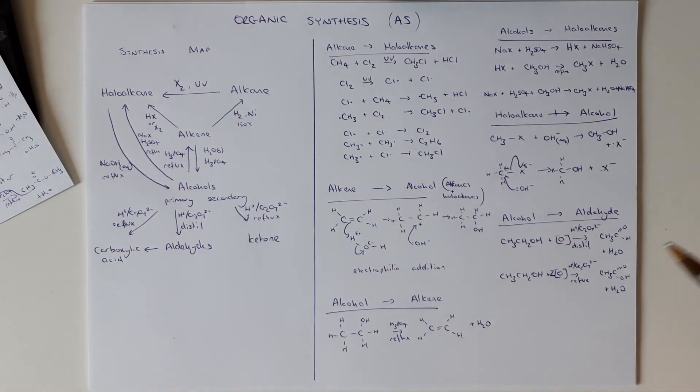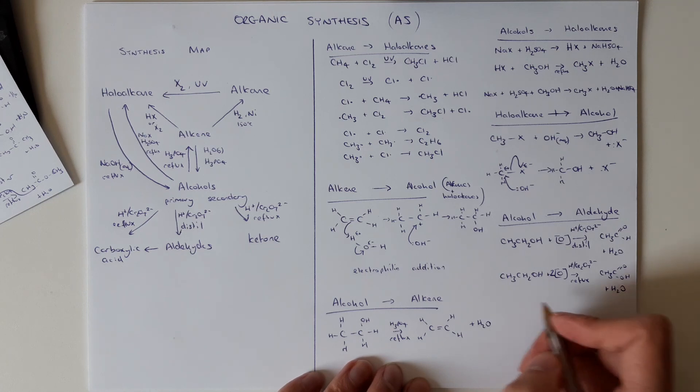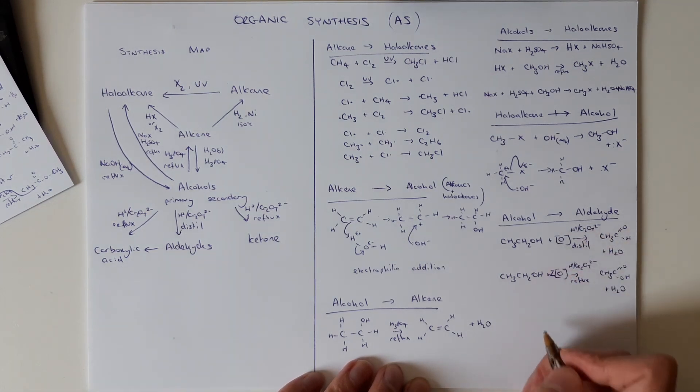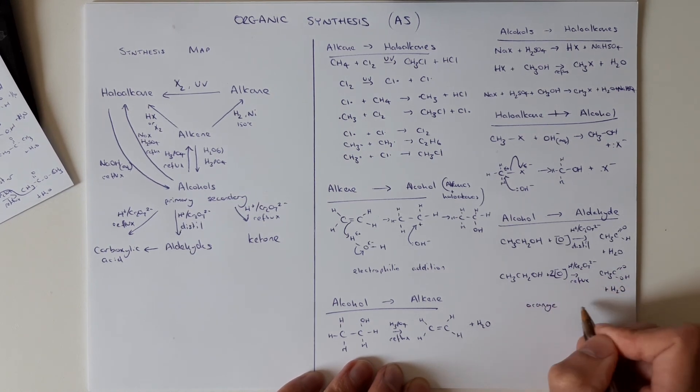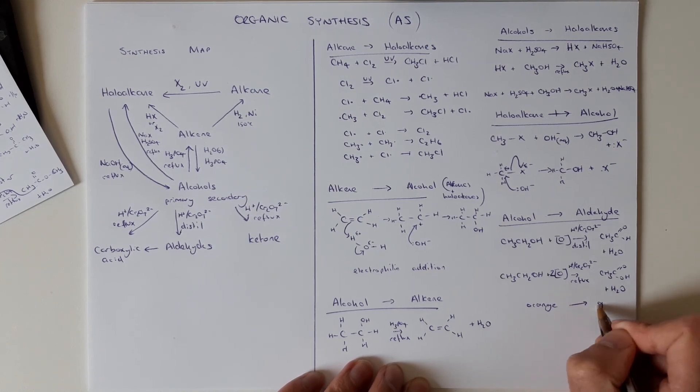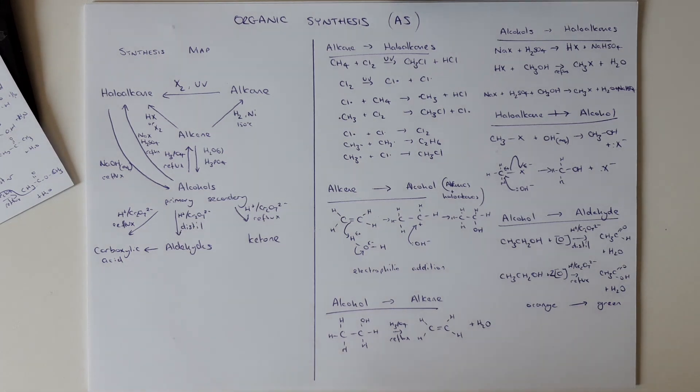The secondary to ketone is exactly the same as this first stage, except it'll be a secondary alcohol. Key bit you need to know here is the color change. So dichromate is that we're reacting this with. It's our oxidizing agent. It's originally orange. And then it goes green or dark green or black in our final products. And that is your synthesis map and all our first year reactions.